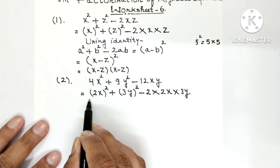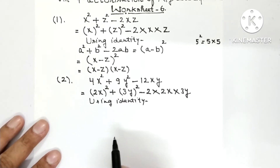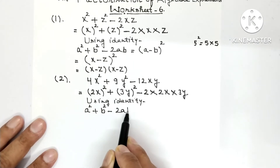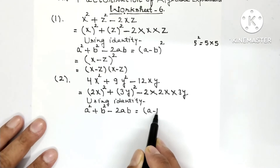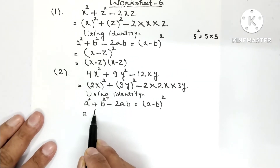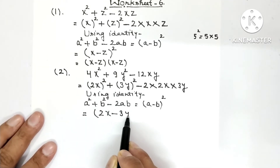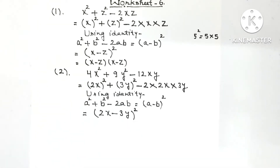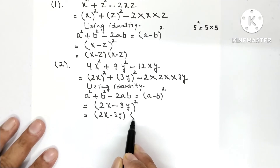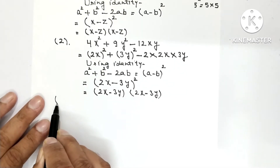Now the identity is formed: a² + b² - 2ab, where a is 2x and b is 3y. Using identity: a² + b² - 2ab = (a-b)², so the answer is (2x-3y)². Opening it: (2x-3y)(2x-3y). This is the factorized form. Now we will do Question 3.